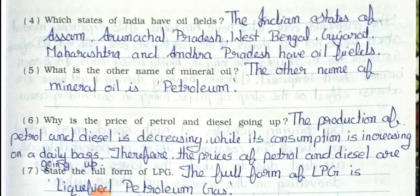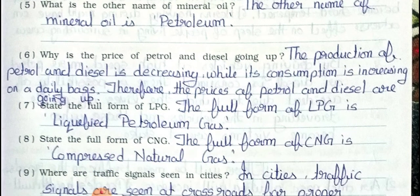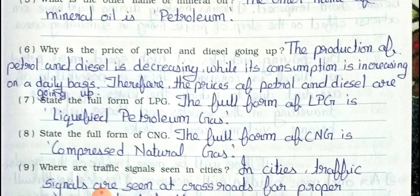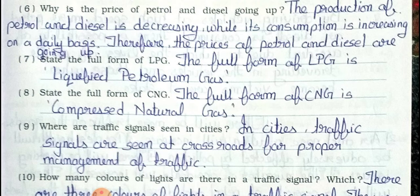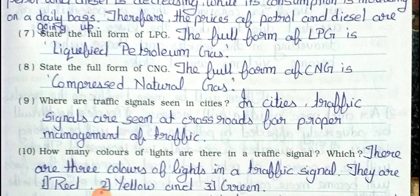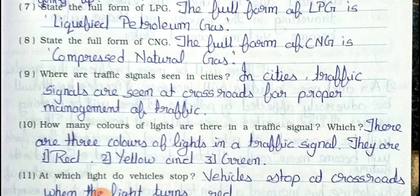Question 5: What is the other name of mineral oil? The other name of mineral oil is petroleum. Question 6: Why is the price of petrol and diesel going up? The production of petrol and diesel is decreasing while its consumption is increasing on a daily basis. Therefore, the price of petrol and diesel is going up. Question 7: State the full form of LPG. The full form of LPG is Liquefied Petroleum Gas. Question 8: State the full form of CNG. The full form of CNG is Compressed Natural Gas.